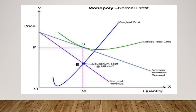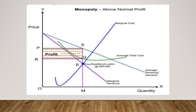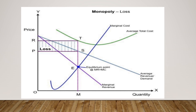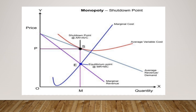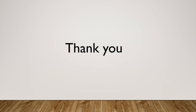Under monopoly: normal profit occurs when average total cost equals average revenue; above normal profit occurs when average total cost is less than average revenue; loss occurs when average total cost is greater than average revenue; and at the shutdown point, average variable cost equals average revenue, and the company must meet average fixed cost within one month or else it should shut down.